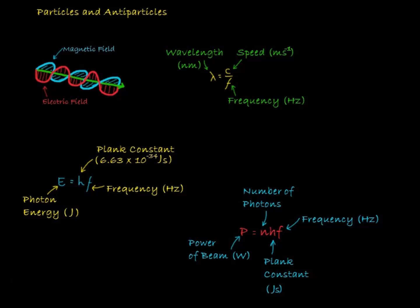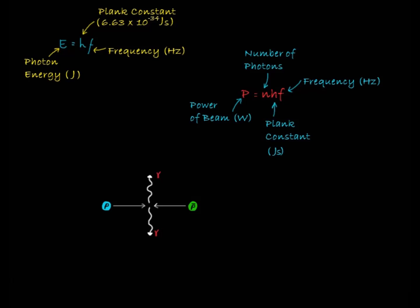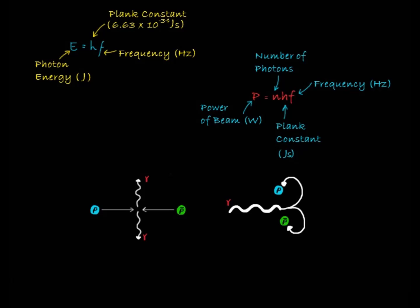When particles and antiparticles meet they destroy each other and release radiation. This is called annihilation. We can also produce particles and antiparticles from a photon. This is called pair production.